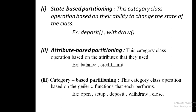The third method is category-based partitioning, which categorizes class operations based on the generic functions each performs. In the account class, the available functions include opening the account, setting up the account, depositing, withdrawing, and closing. Operations based on these generic functions constitute category-based partitioning. These are the three types of partitioning methods in partition testing.